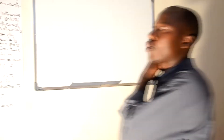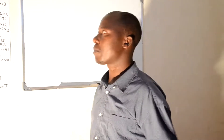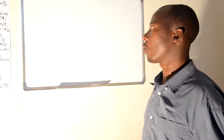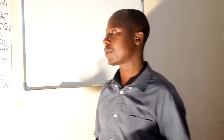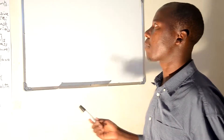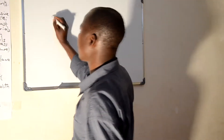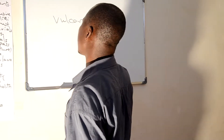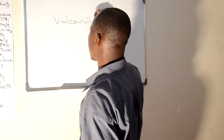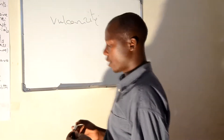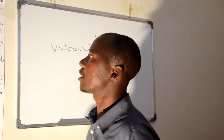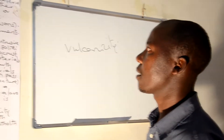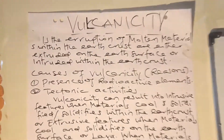Dear students, welcome to another subtopic based on geomorphology, specifically on vulcanicity, whereby the earth can be moving from one place to another. This subtopic is called vulcanicity, and it refers to the eruption of molten materials within the earth's crust, which are either extruded on the earth's surface or intruded within the earth's crust.